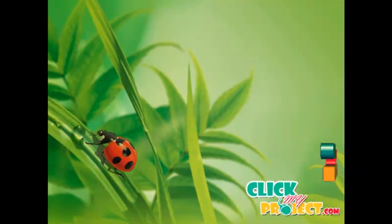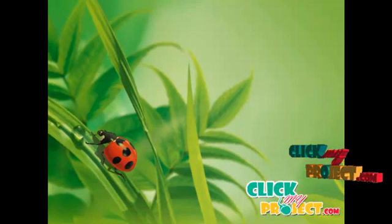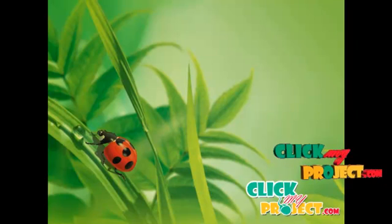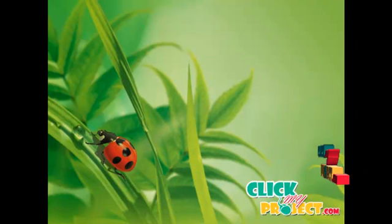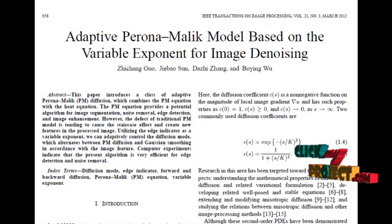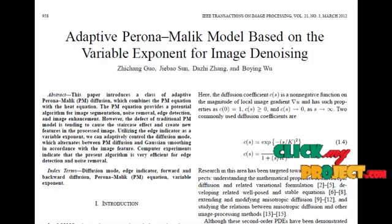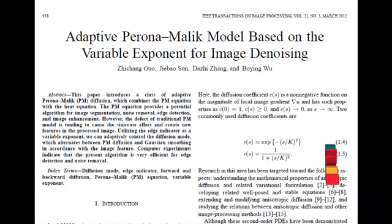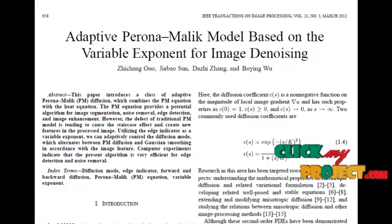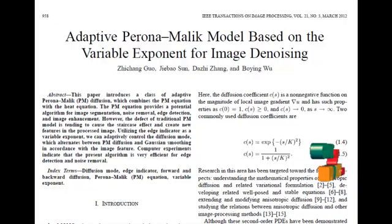Welcome to ClickMyProject.com. Let's discuss the paper 'Adaptive Paranormalic Model Based on Variable Exponent for Image Denoising.' Among the noise removal techniques based on anisotropic diffusion equations, the Paranormalic equation has stimulated a great deal of interest in the image processing community in the last decade.